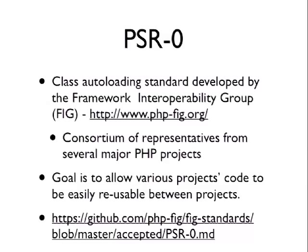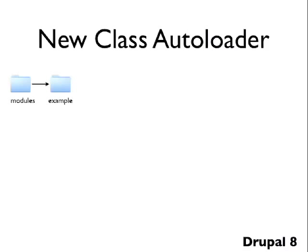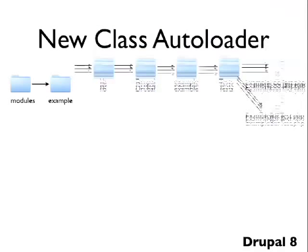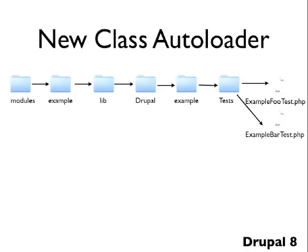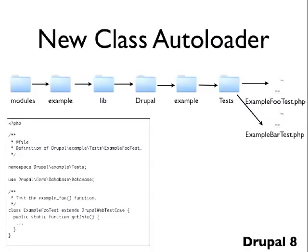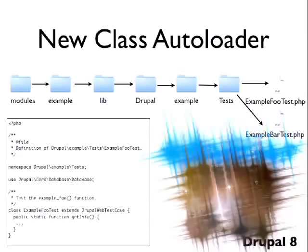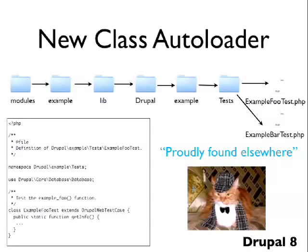PSR0 is basically an auto-loading standard developed by the PHP Framework Interoperability Group, which takes PHP people from different projects and tries to decide on standards for better reuse between projects. They developed a standard way of structuring your directories and file names so you can develop auto-loaders that work seamlessly between projects. Here's what it looks like in practice: you have your modules/example directory, then you have lib/Drupal/example/tests, and then you split your tests out into separate files because every single file can only have one class in it.